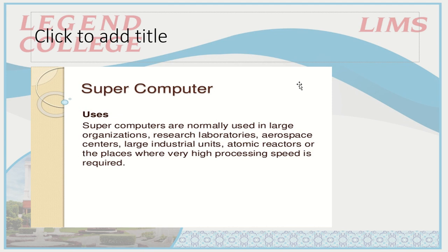So to summarize: mainframes and minicomputers have a primary focus on users — how many users can be supported at a maximum. Supercomputers focus on computational power — executing complex instructions at the highest possible speed.